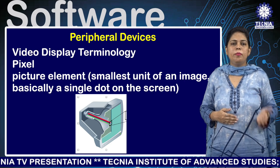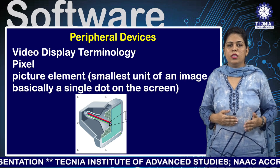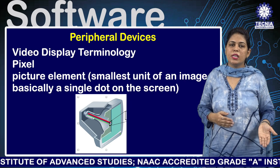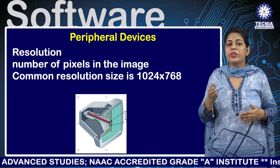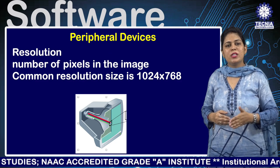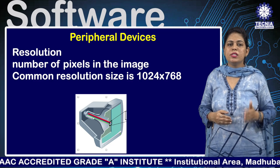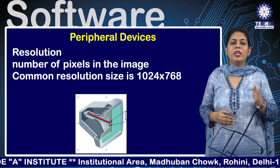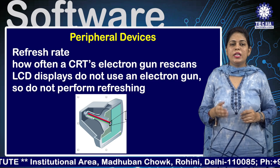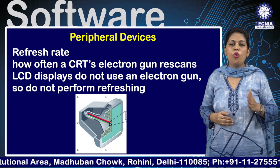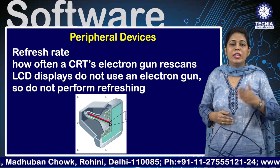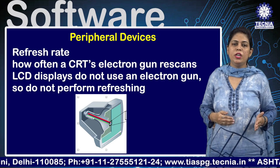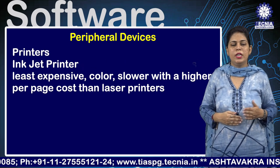In video display terminals, the term pixel means picture element — the smallest unit of an image, basically a single dot on the screen. Resolution refers to the number of pixels in an image; a common resolution is 1024x768. You can increase or decrease the screen resolution. Refresh rate is how often the CRT's electronic gun re-scans; LCD displays do not use an electronic gun and therefore do not perform refreshing.